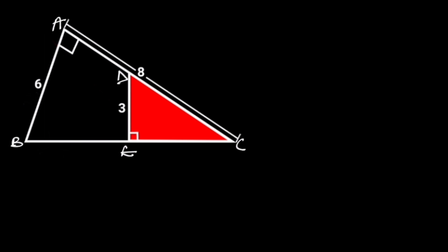Next, let's focus on the inscribed triangle, that is, triangle CDE. To find the area of this triangle, let's recall that the area of the triangle is 1 over 2 times base times height.